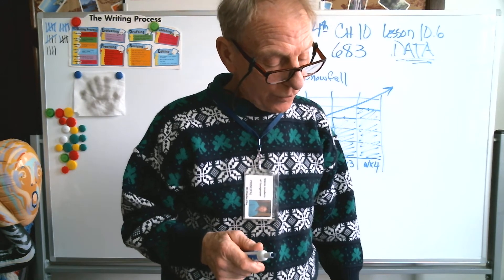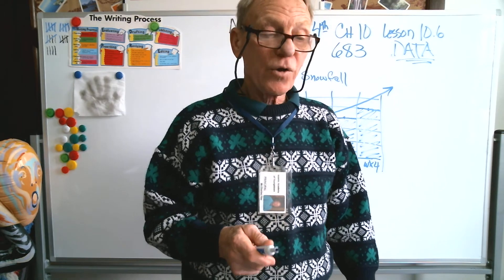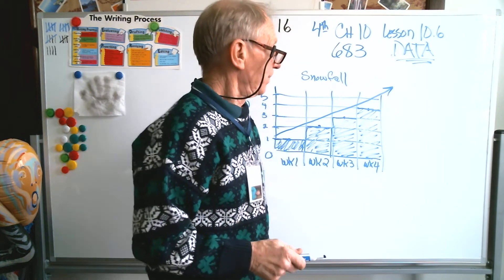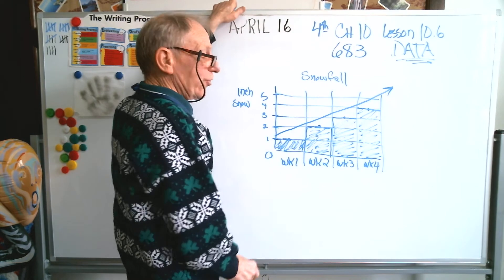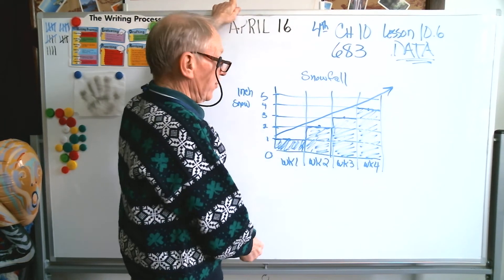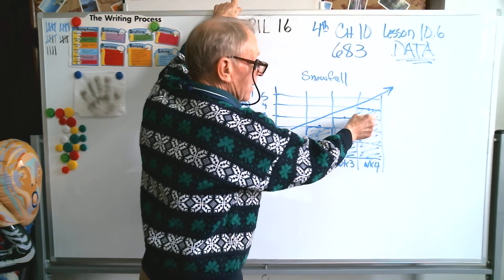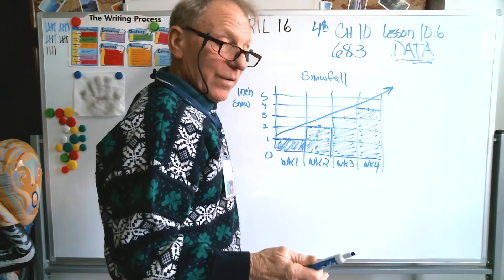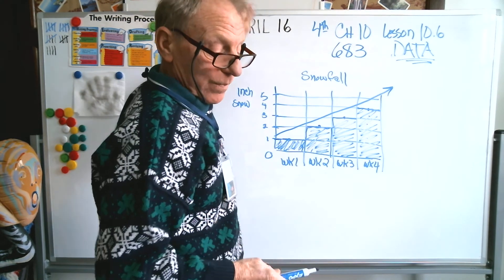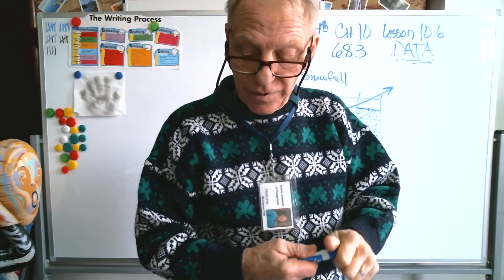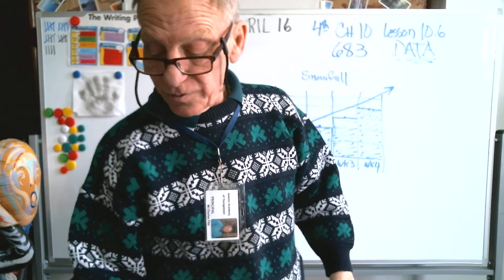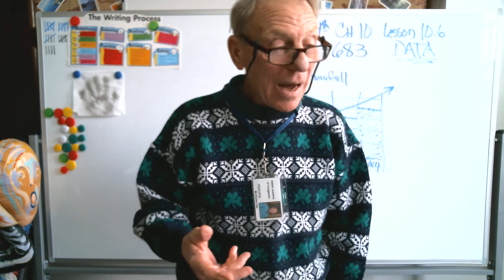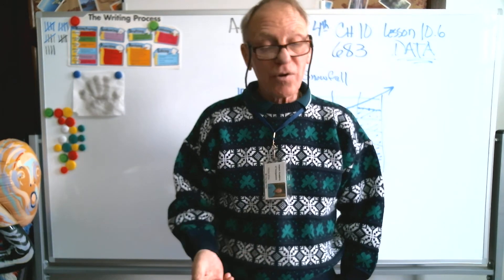Finally, number 5: there were 3 more inches of snow in week 4 than in week 1. Week 1 had 1 inch and week 4 had 4 inches — and there were indeed 3 more inches of snow in week 4. So that's what I wanted to go over with you today: how you solve problems, because what's the point of having data if you don't somehow use it to get some information and solve a problem you might have.